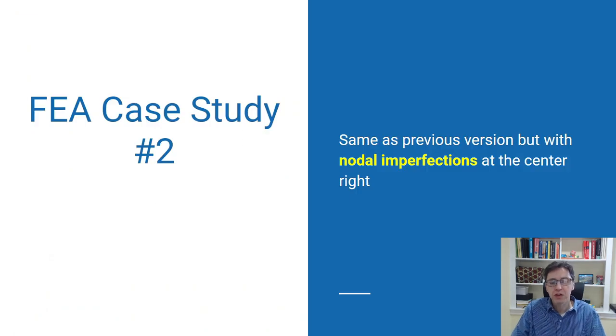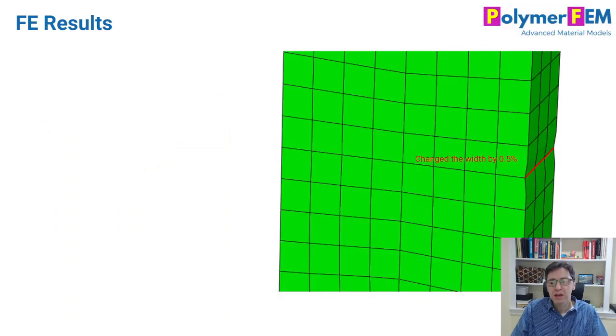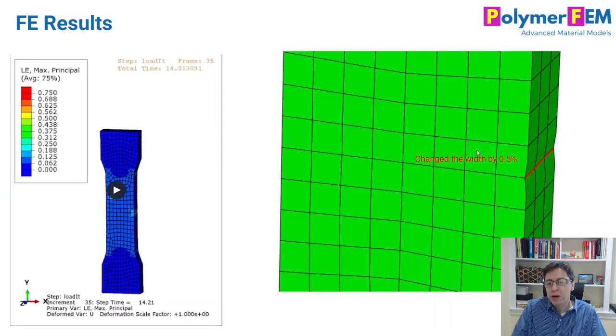In my second finite element study, I will talk about imperfections. Many times when you simulate these types of problems, people introduce geometric defects. And that's what Parsons did in his paper. He moved a few nodes on the right side, for example, a little bit inwards to make the cross-sectional area slightly smaller there, which makes the stress slightly higher.